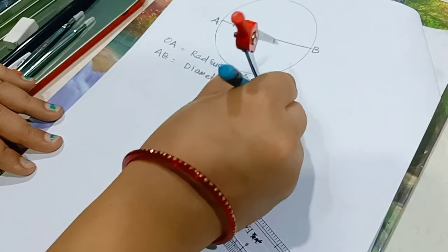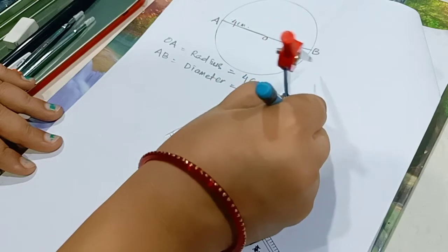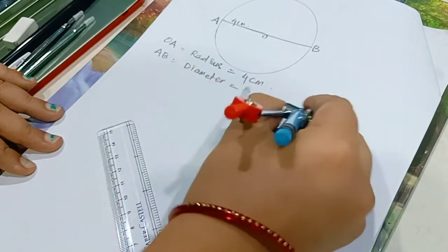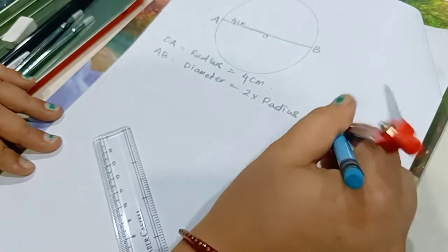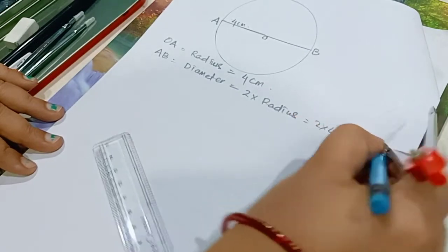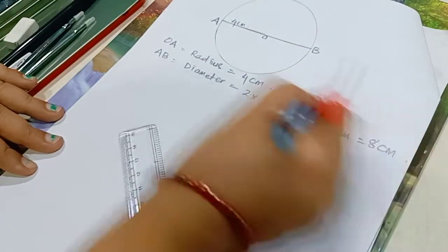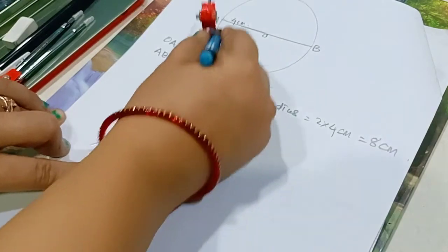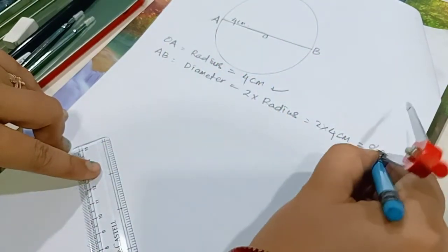That will be 2 multiplied with radius. Twice of radius is the diameter, so this is 2 multiplied with 4 cm, that is 8 cm. Radius is 4 cm and diameter AB is 8 cm.